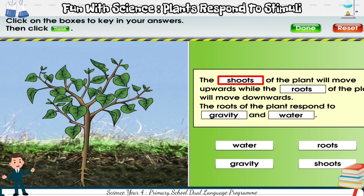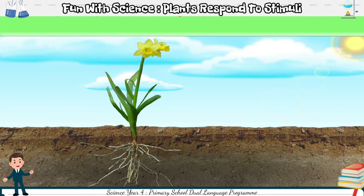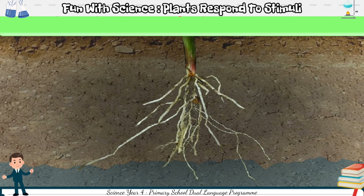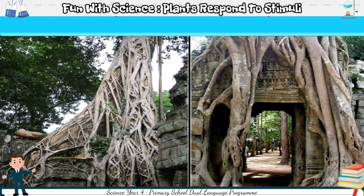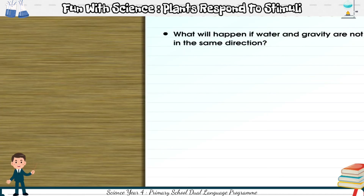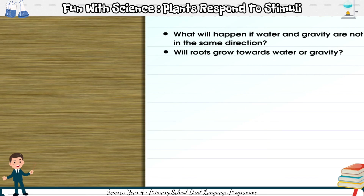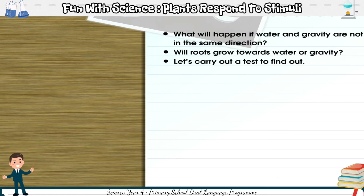The shoots of the plant will move upwards while the roots of the plant will move downwards. The roots of the plant respond to gravity and water. The roots of plants respond to water and gravity. The roots grow downwards towards water. The roots also grow downwards in response to gravity. We have learned that roots grow downwards towards water and gravity. What will happen if water and gravity are not in the same direction? Will roots grow towards water or gravity?